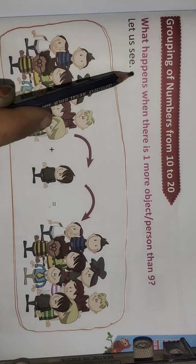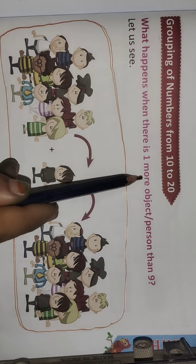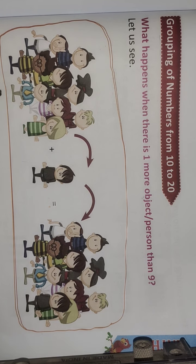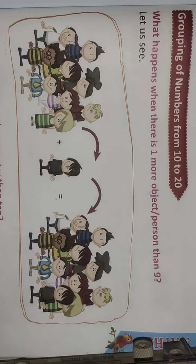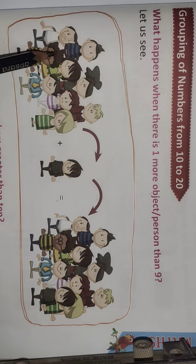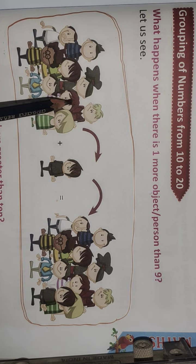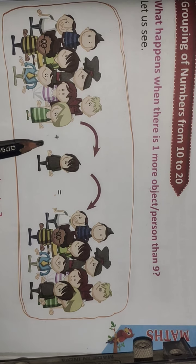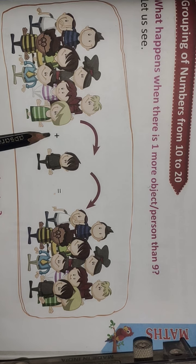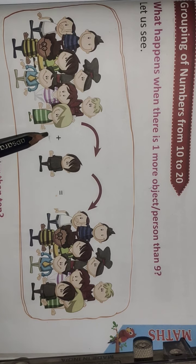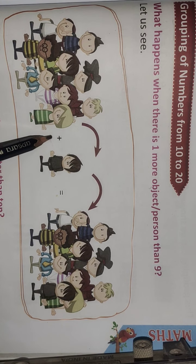See here — what happens when there is one more object than 9? Let's see. Some pupils are there. How many pupils? Count them: 1, 2, 3, 4, 5, 6, 7, 8, 9. Here is the plus symbol — the addition symbol. 9 plus 1.